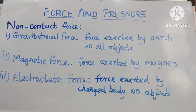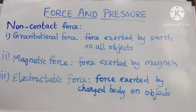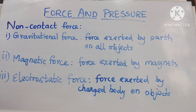Next, non-contact force. First, gravitational force: the force exerted by the earth on all objects, pulling them towards the earth. For example, a coin or pen falls down when it slips from your hand, a ball thrown upward falls back down, and water in rivers flows downwards.